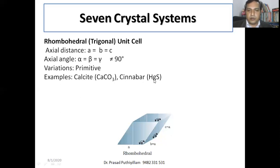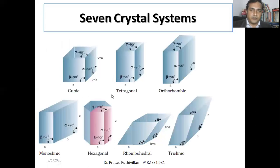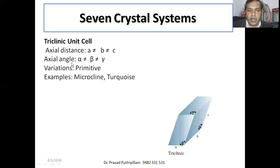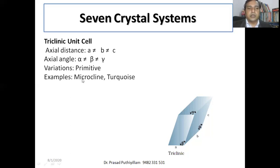Triclinic unit cells: all axial distances are different — a ≠ b ≠ c — and all axial angles are also different — α ≠ β ≠ γ. There is only one variation: primitive. Examples include microcline and turquoise.